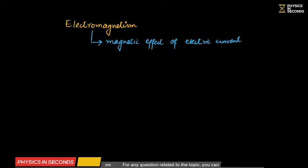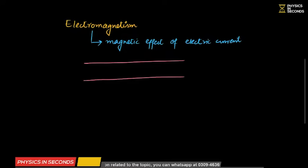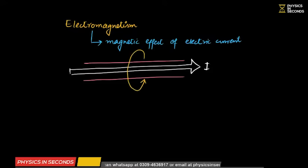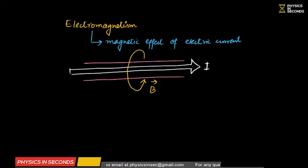Remember this point. Electromagnetism is basically the magnetic effect of current — if we have a conductor and current passes through it, then depending on the shape of the conductor, a magnetic field is produced around it. So, production of magnetic field due to flow of electric current is called electromagnetism, and discussing the effects of that magnetic field is also part of electromagnetism.